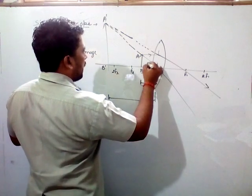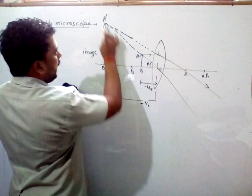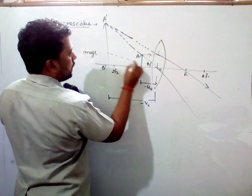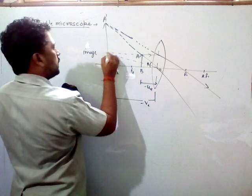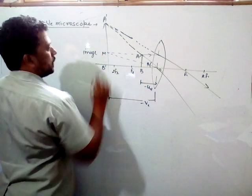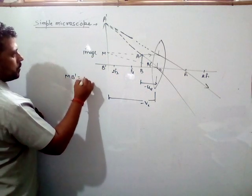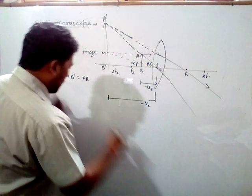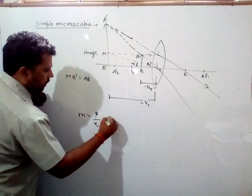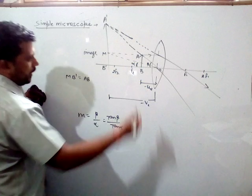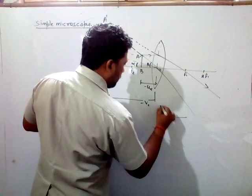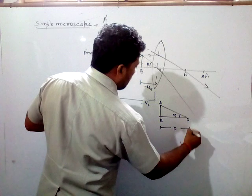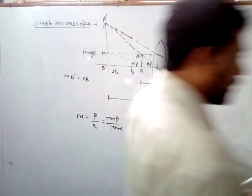Angle beta is the angle subtended by the image. Magnification M is equal to beta upon alpha, which equals tan beta upon tan alpha. For the object, AB corresponds to alpha and D is the reference distance.